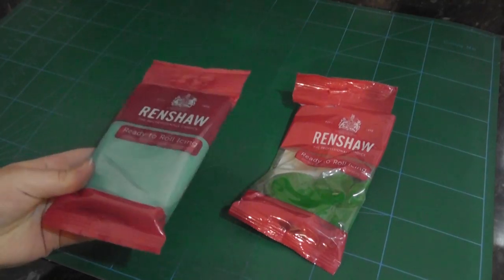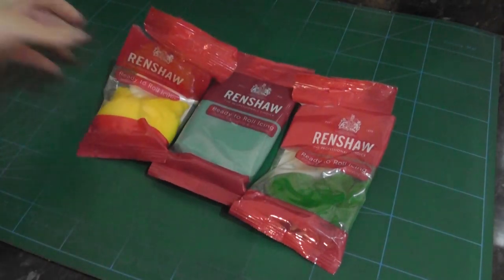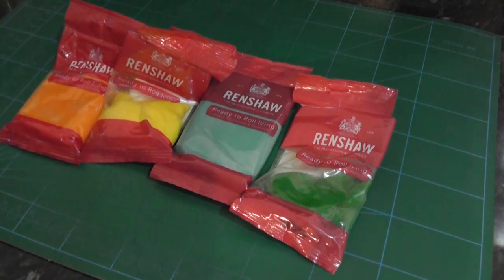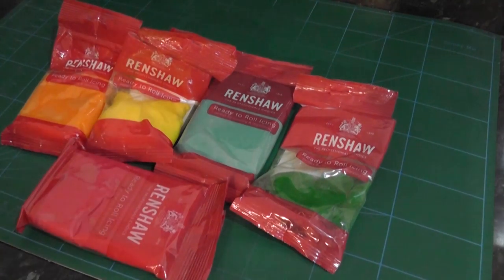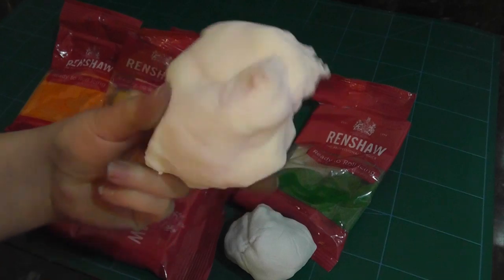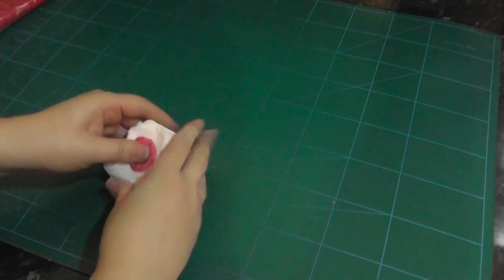Next, gather your colors together. I love Renshaw's for this as they come in a nice bright range. I have some green, teal, yellow, orange, hot pink, baby blue, and also some white which I can then mix with any of these colors to make different shades such as baby pink. Just take a ball of white and a pinch of hot pink.